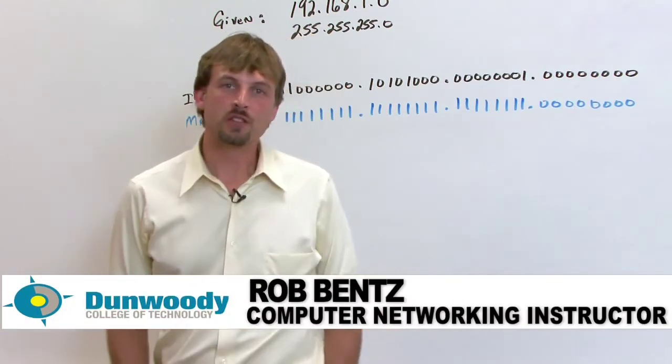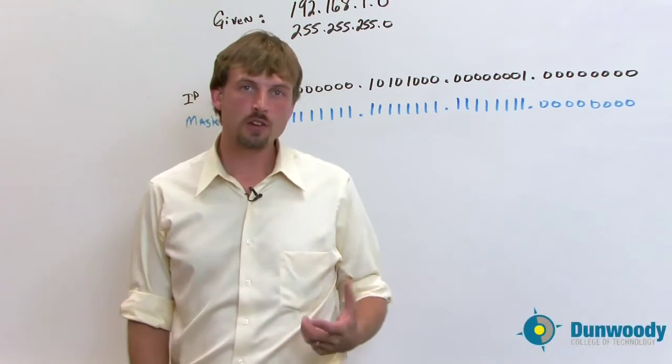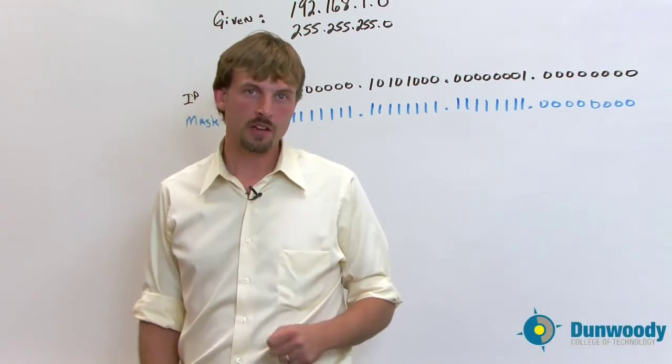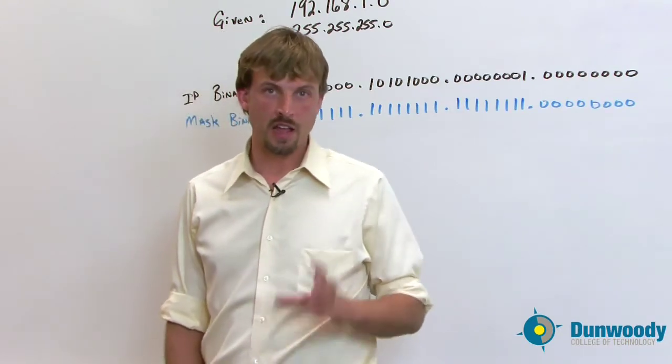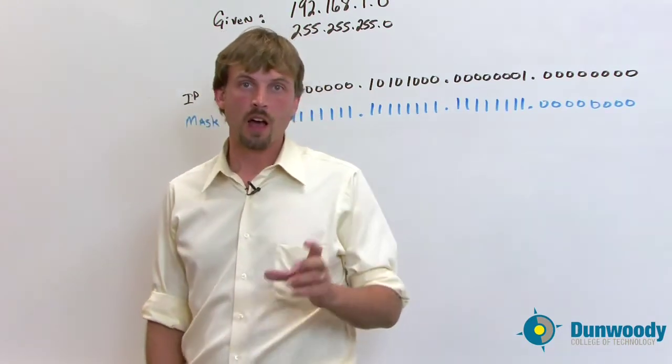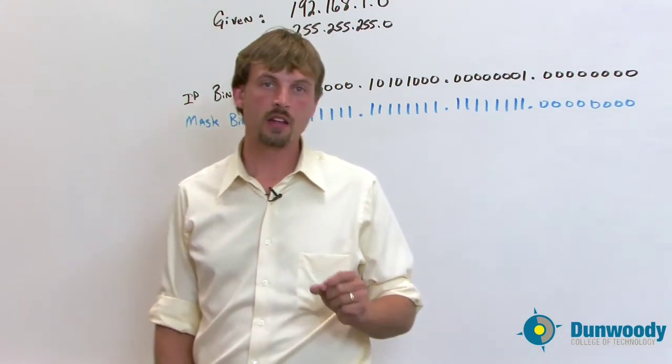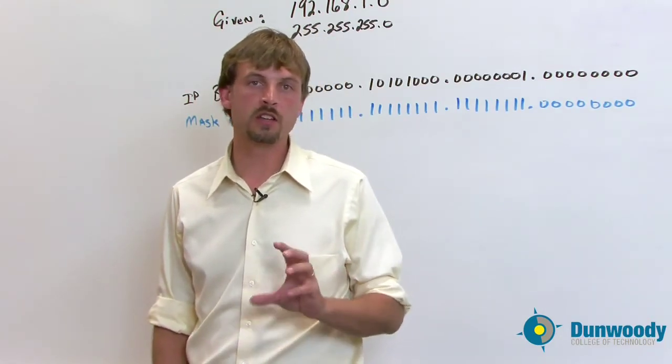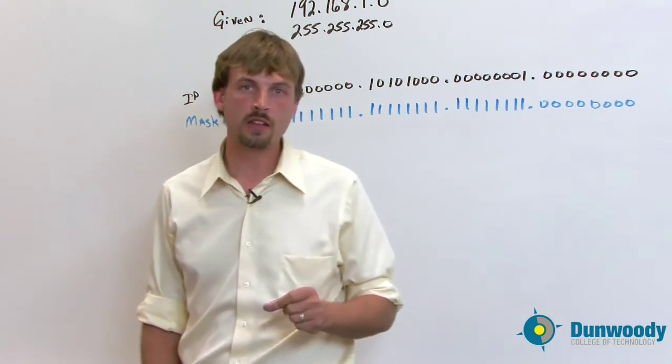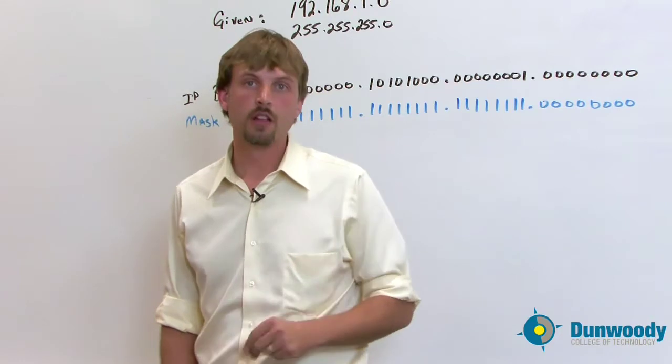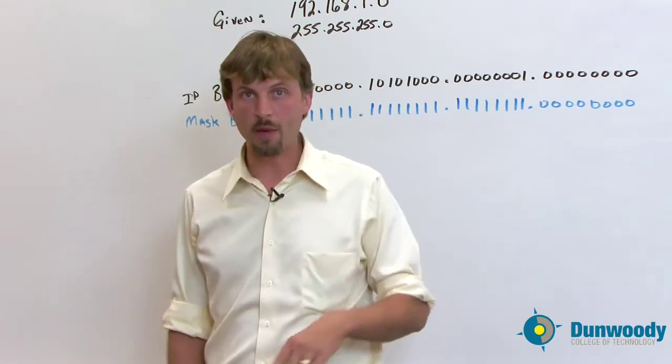Hi, my name is Rob Bentz. I'm an instructor at Dunwoody College of Technology. We're going to take on part two here of our subnetting series and actually do the work of taking an IP address and subnetting it down. We're going to break a class C address and what the process is going to reveal here is that we're going to take one logical network and divide it into several other networks, and that'll have some benefits and some drawbacks to that.